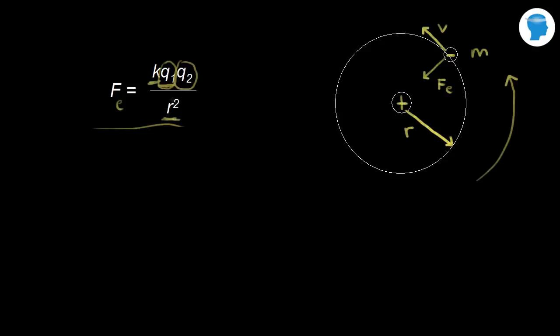Let's plug in what we know. K is a constant we'll get to later. Q1 is the charge on the proton, which we'll call E — the elementary charge. Q2 is the charge on the electron, which has the same magnitude as the proton but is negative, so we put in negative E.